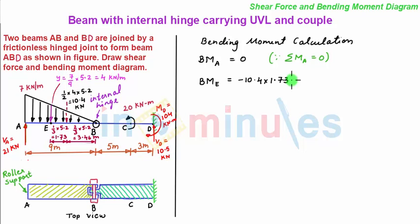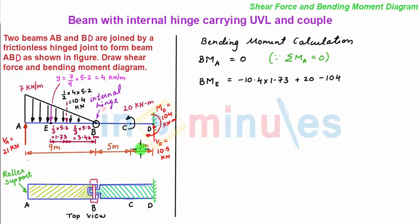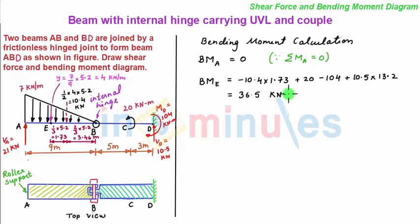Then there is an anticlockwise moment of minus 20 kN·m. Since anticlockwise moment on the right-hand side of the section is positive, we have plus 20. Then we have a clockwise moment of 10.5 kN acting at a distance of 5.2 plus 5 plus 3, equal to 13.2 meters. So we have plus 10.5 multiplied by 13.2, which comes out to be 36.5 kN·m positive.